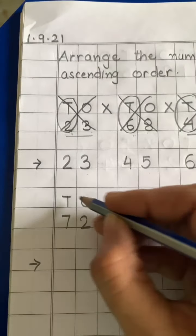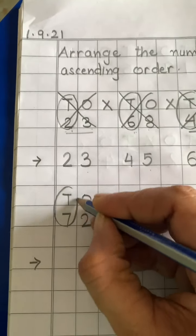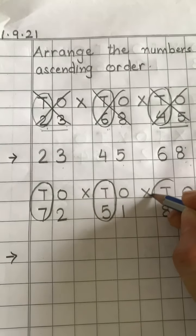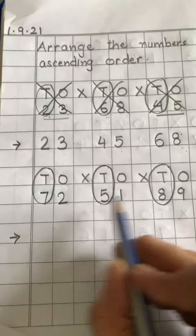First step kya hai? Hame ne tens place one ko circle karna hai. Tens place peh koon-koon hai? Seven, five, eight. Okay, circle?